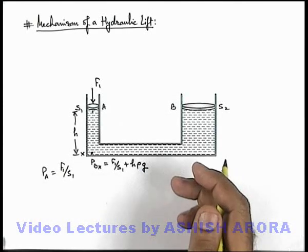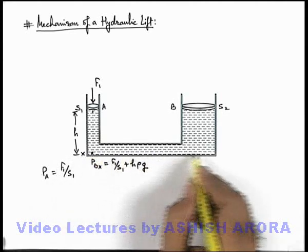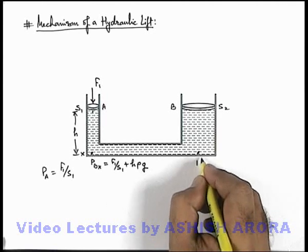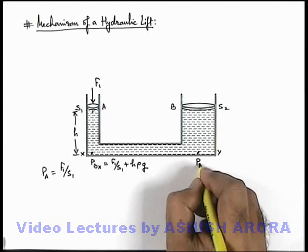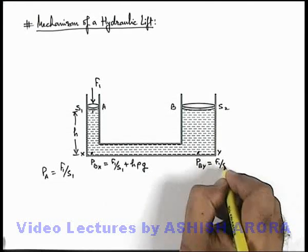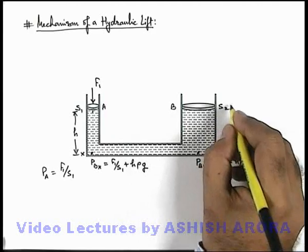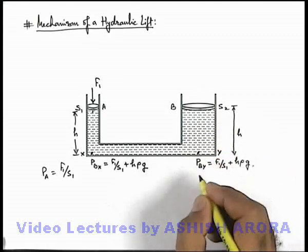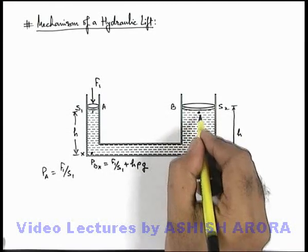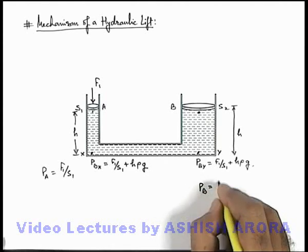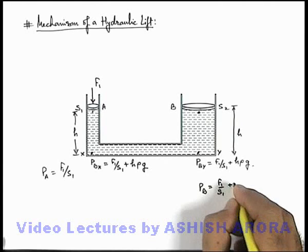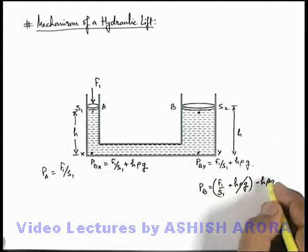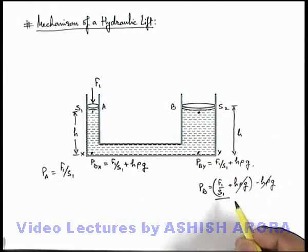Now we can state that at the whole bottom level, the pressure at this point will remain the same. So if this point is Y, then pressure at point Y can be written as F1/S1 plus h·ρ·g. And if the other piston B is also at a height h above this bottom level, then pressure at point B equals F1/S1 plus ρg minus ρg — these cancel out — so pressure at point B is simply F1/S1.